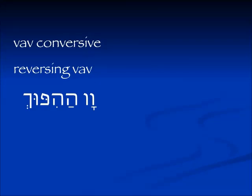The whole concept of the vav conversive is a little odd. What happens is when you have a vav in front of either a perfect or imperfect — a past tense or a future tense verb — when you read it you read the opposite tense. Some people call it the reversing vav. In Hebrew it's called vav ha-hipuch, from the root hafach, which means to turn upside down.